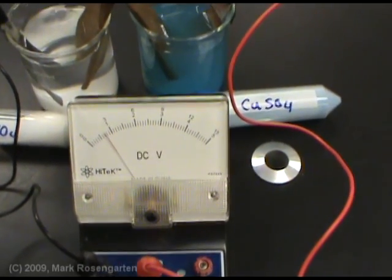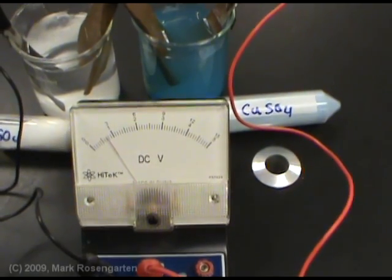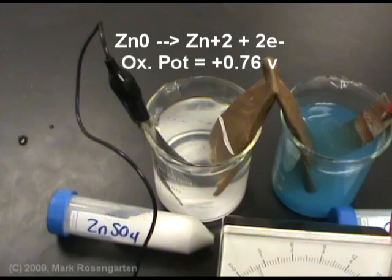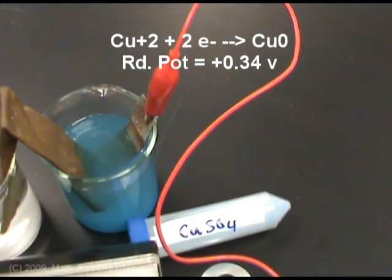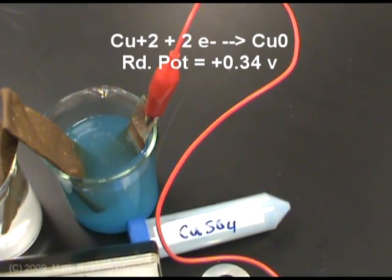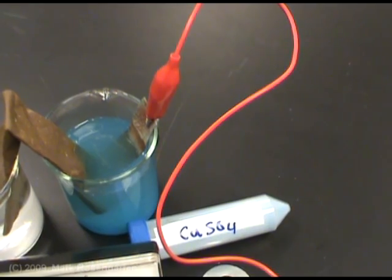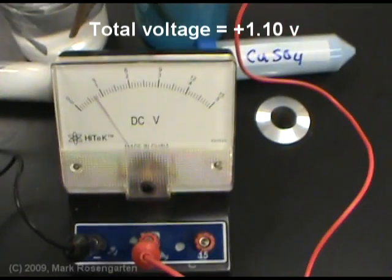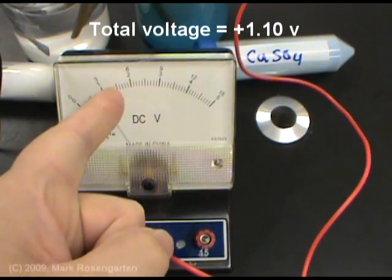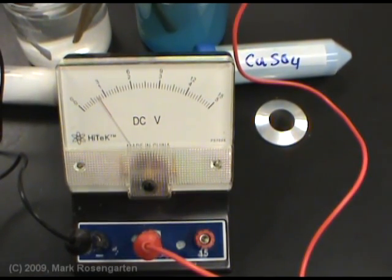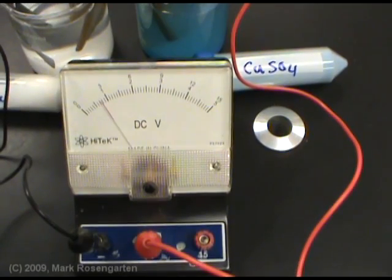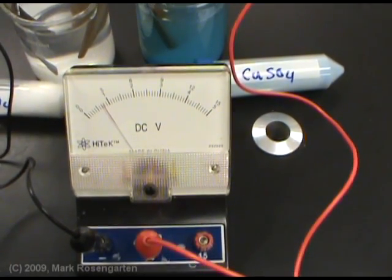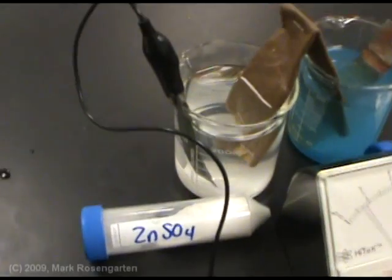For this particular reaction, the oxidation potential for zinc is 0.76 volts. The reduction potential for copper is positive 0.34 volts. So if both of these solutions were one molar, the voltage we should be seeing would be about 1.1 volts. Obviously, these solutions are less than one molar in concentration, which is why we're seeing less than 1.1 volts as our final voltage.